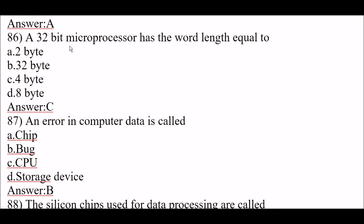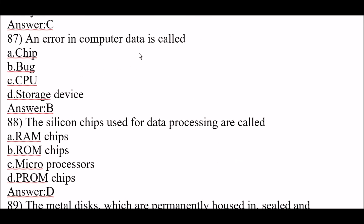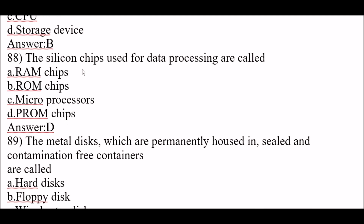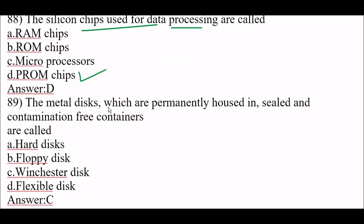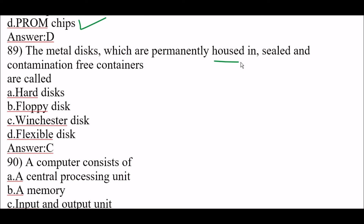Next question: a 32-bit microprocessor has a word length equal to option C, 4 bytes. Next question: an error in computer data is called option B, a bug. Next question: silicon chips used for data processing are called option D, PROM chips. Next question: metal disks permanently housed in sealed, contamination-free containers are called Winchester disks — option C.